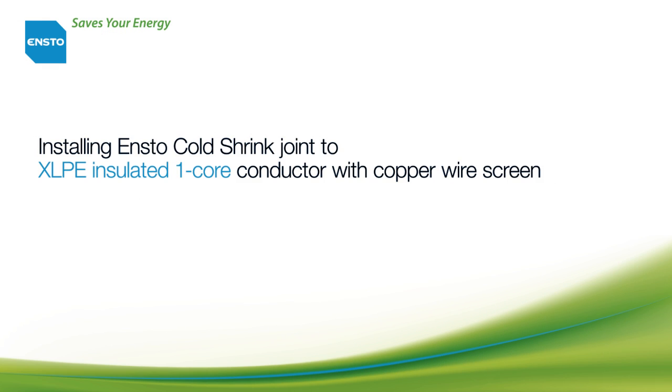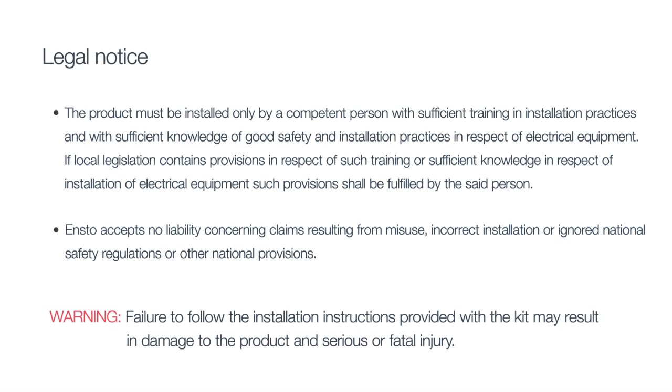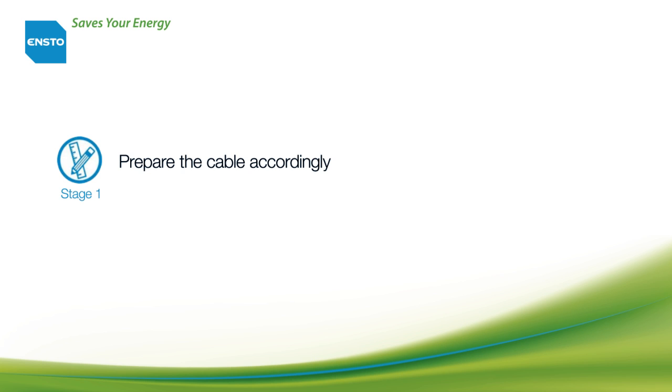Installing ENSTO cold shrink joint to XLPE insulated one core conductor with copper wire screen. Stage 1: Prepare the cable accordingly.